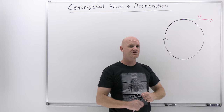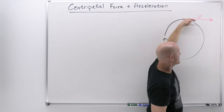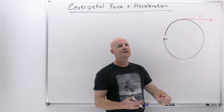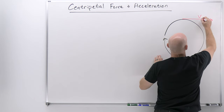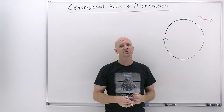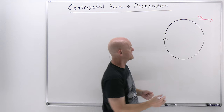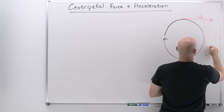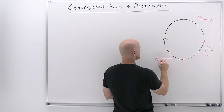If you magically snapped the string or cut the string right at that instant, it would just go flying off in that direction. This is the direction of the linear velocity, which we most commonly call the tangential velocity — the instantaneous velocity for something undergoing circular motion. At the right side it would point straight down, and at the bottom it would point straight to the left.